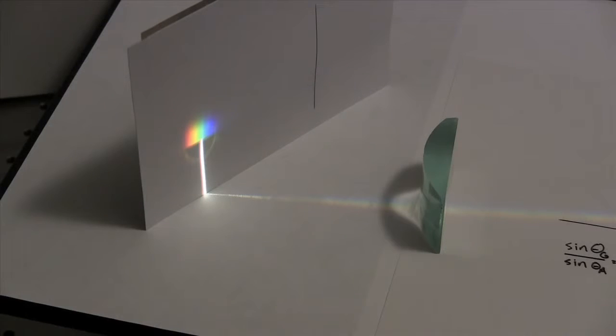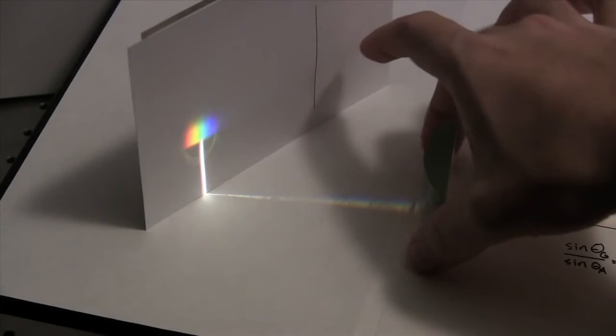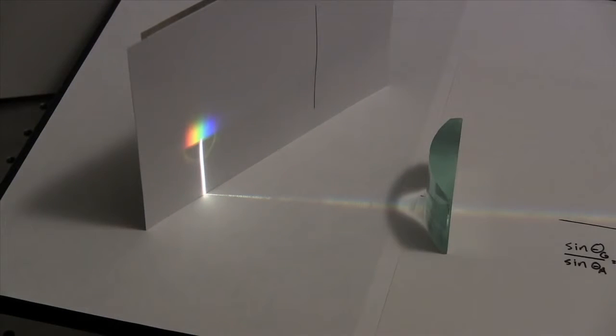Now it turns out that you don't actually need all of these colors to trick your eyes into seeing white. If you're watching this on a TV screen or a computer screen at home, what you're seeing as white is actually a combination of red, blue, and green. But for our purposes, we're seeing the sum of all of the colors in the input spectrum.